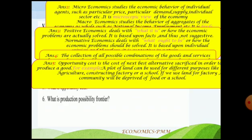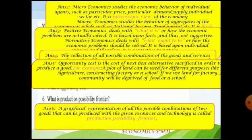Sixth two-mark question: what is production possibility frontier? A graphical representation of all possible combinations of two goods that can be produced with the given resources and technology is called the production possibility frontier. The production possibility set lists all goods and services that can be produced, while the production possibility frontier shows this graphically as possible combinations of two goods with given resources and technology.